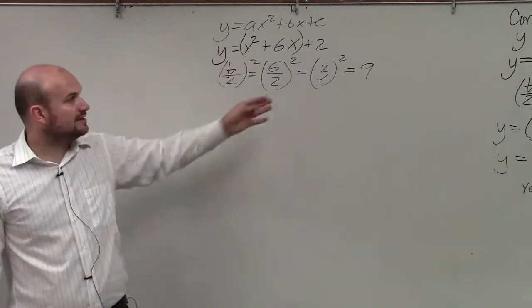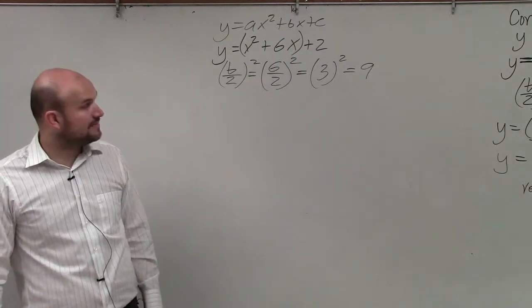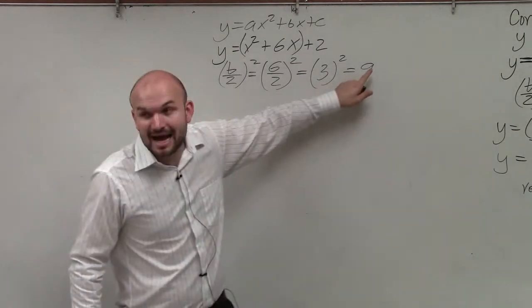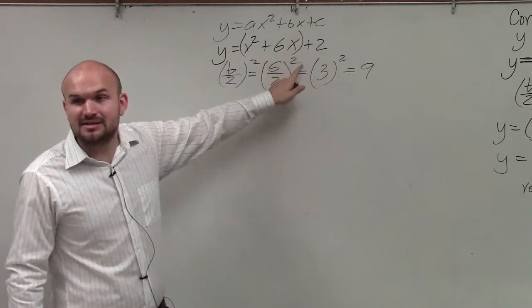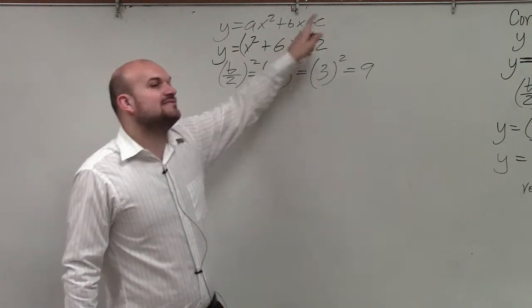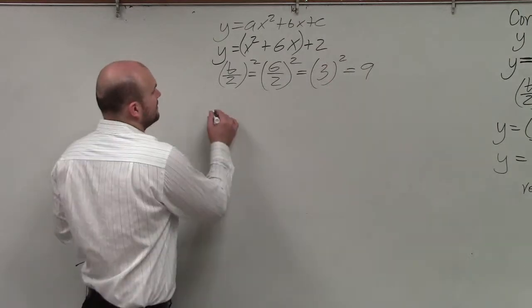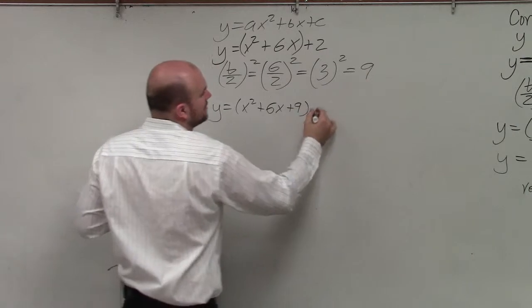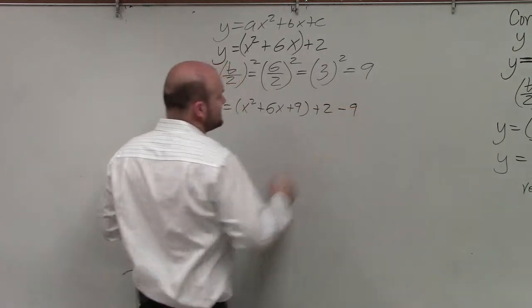All right? So you're going to want to show each step. So now I take the 9 and I add it inside the parentheses. And since I'm adding it to the inside, I'm going to have to subtract it on the outside. So I have y equals x squared plus 6x plus 9 plus 2 minus 9.